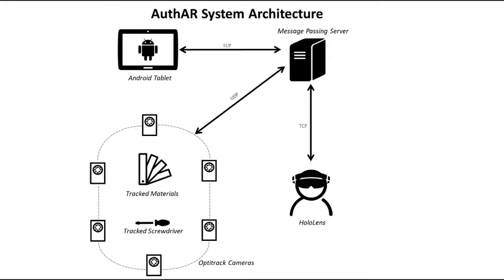OptiTrack cameras streamed real-time position and rotation data to a message-passing server, which then fed that data into the HoloLens.